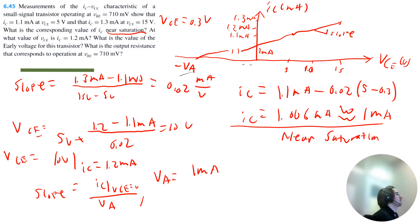So it's going to be 1 milliamp divided by the slope, which is 0.02, which is equal to 50 volts. So the early voltage is 50 volts.